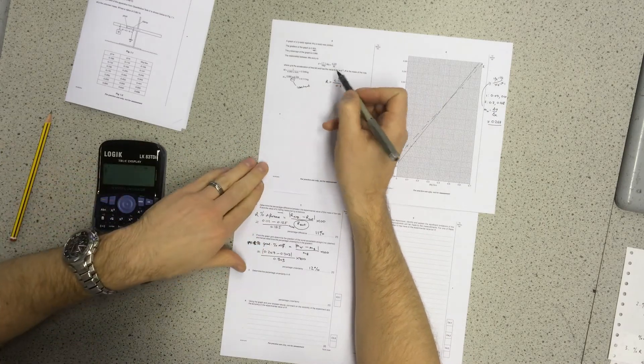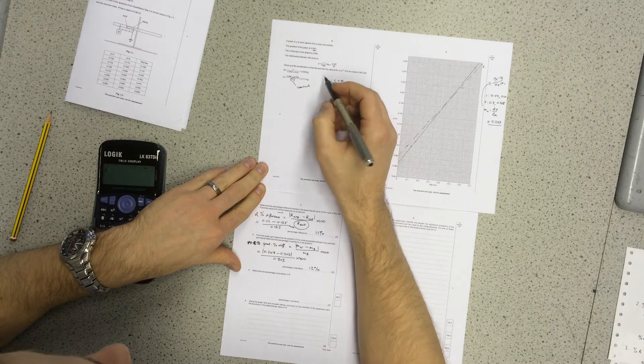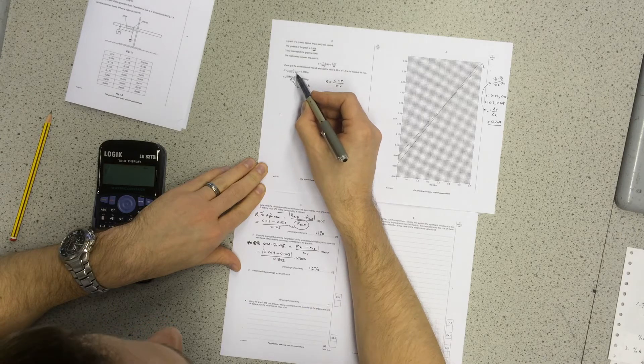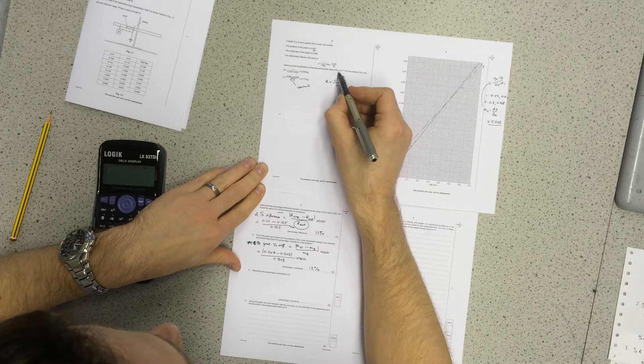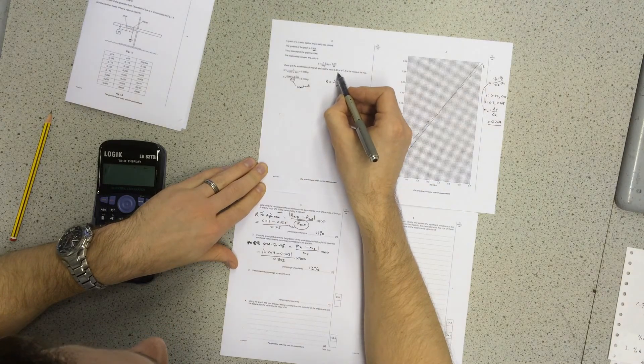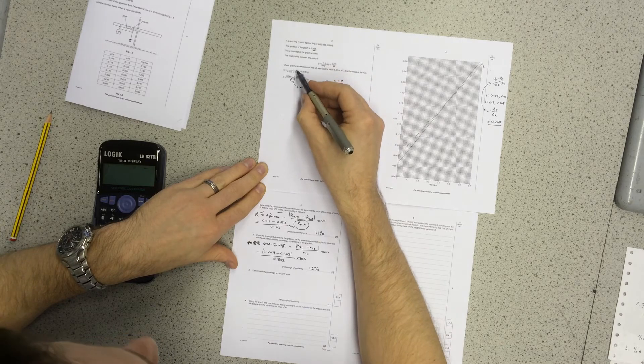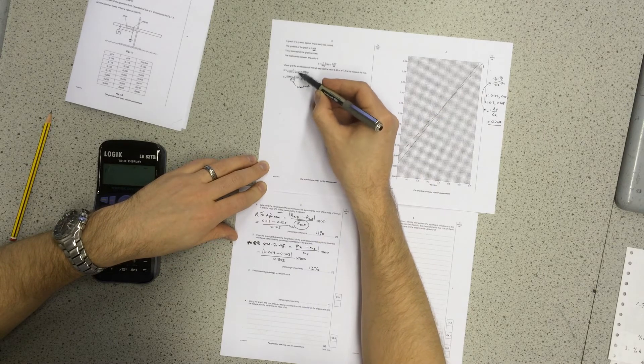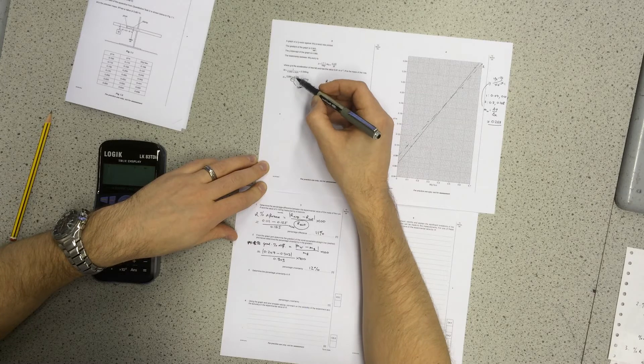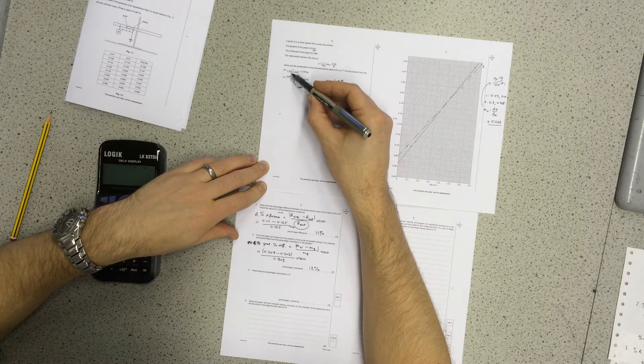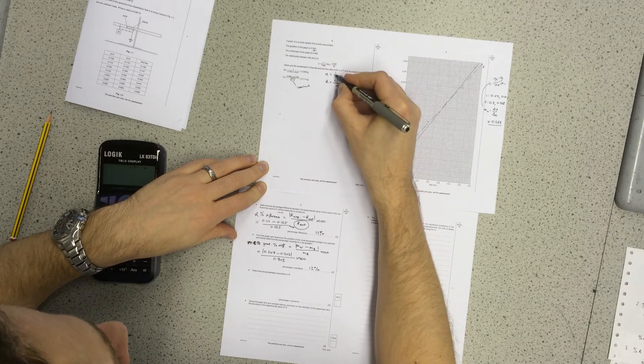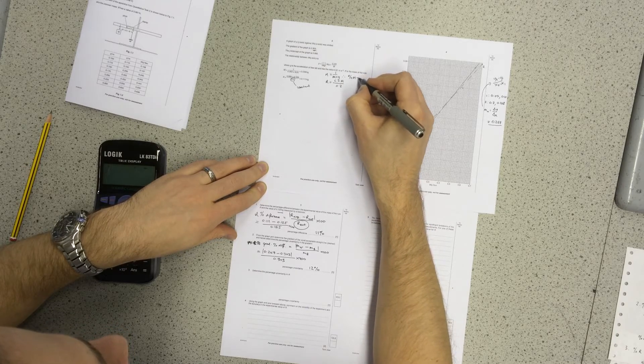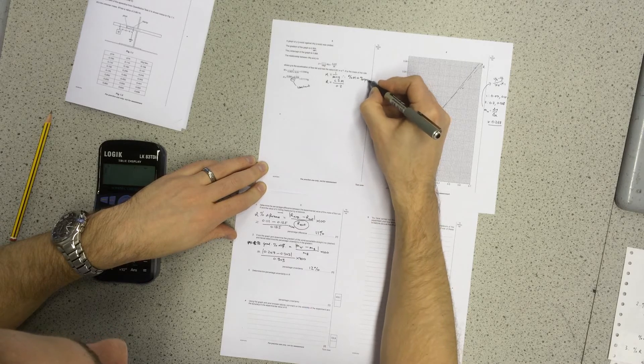So R is equal to C times m over 0.2. You can see that up here in this term if you rearrange it. m then is dependent upon the gradient and g. g is a constant, so that doesn't have any uncertainty. It's given to us as 9.81 meters per second squared. But the gradient does. And we are dividing 1 by the gradient and this constant, so two constants in there. The only uncertainty comes from the gradient. So therefore, if m is 1 over the gradient times g, therefore the percentage uncertainty in m is equal to the percentage uncertainty in the gradient.